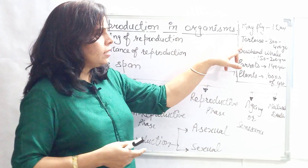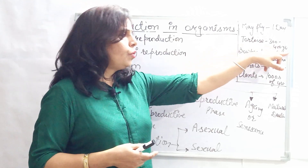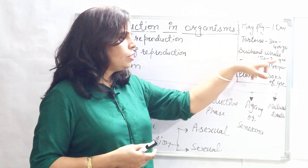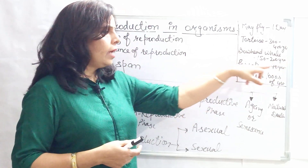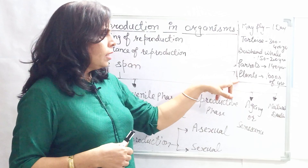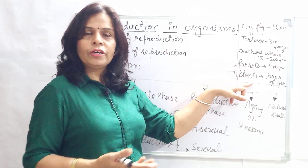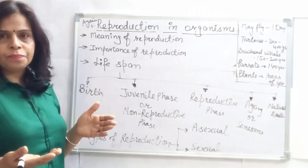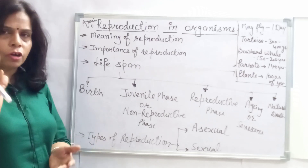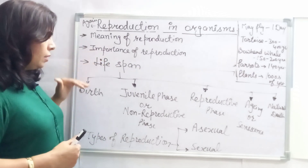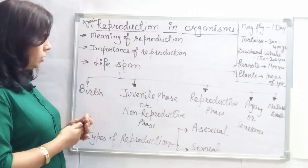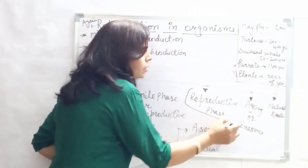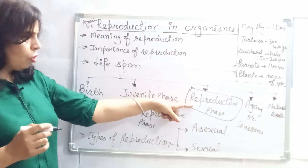The longest lifespan is considered to be that of the tortoise — 300 to 400 years. The bowhead whale has a lifespan of 150 to 200 years. Parrots are considered to live up to 140 years. Plants can live for thousands of years. Human lifespan varies between 70 to 100 years depending on various factors. The area of concern in our chapter is the reproductive phase.